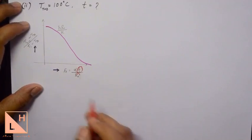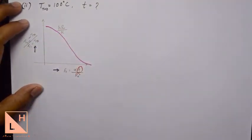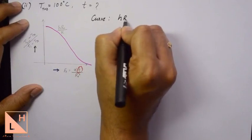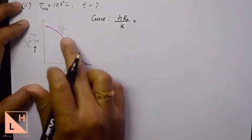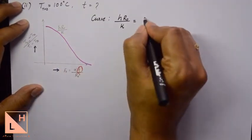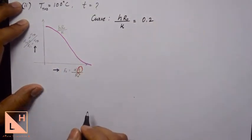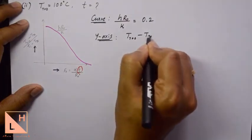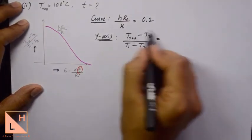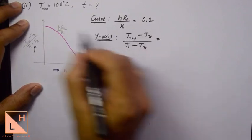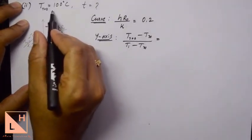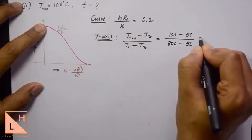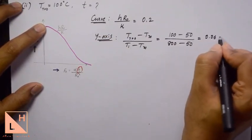The curve parameter hr₀/k is 0.2, already calculated. For the y-axis, all temperatures are known since the centerline temperature is given as 100 degrees Celsius. Substituting into (T₀ - T∞)/(Ti - T∞), we get a y-axis value of 0.0 triple 6 (0.0066).